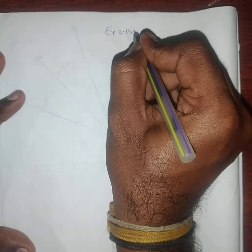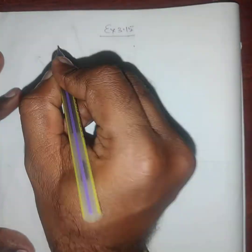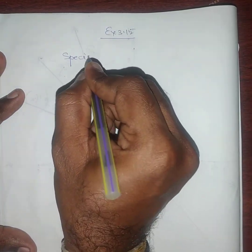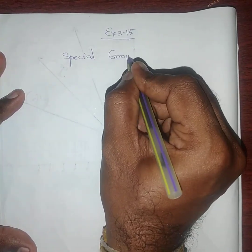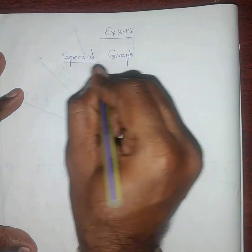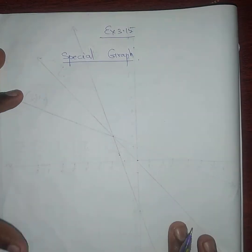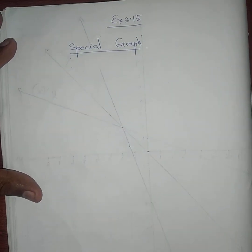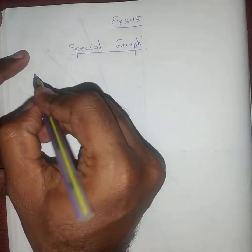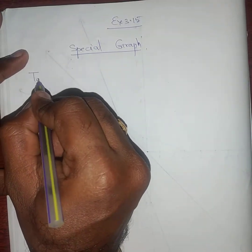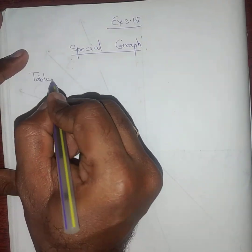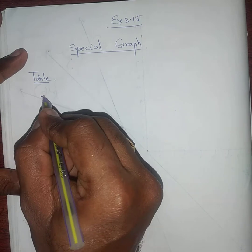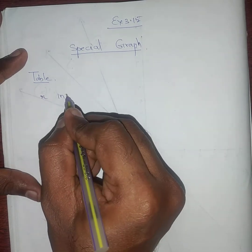Exercise 3.15 — special graph. In this special graph we need to know a few things. The first is called the table. In the table we need to see if x increases.